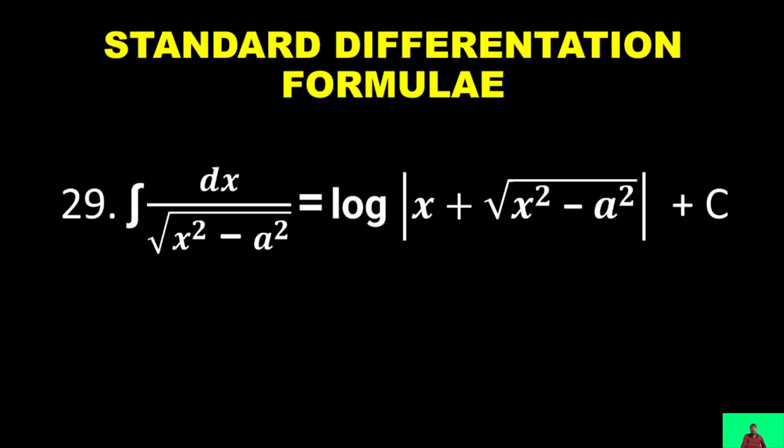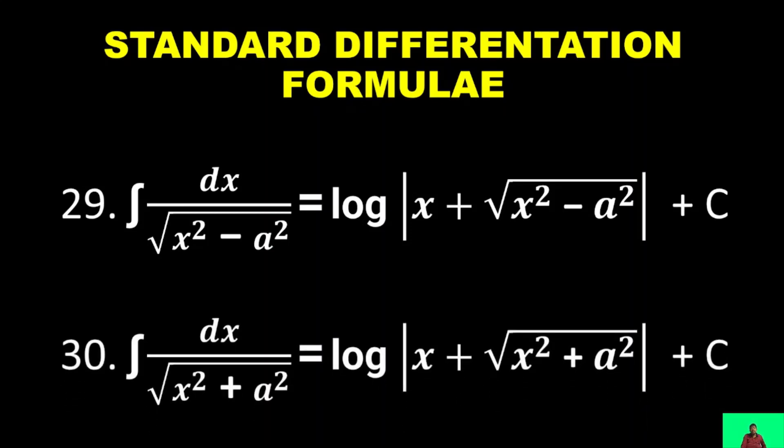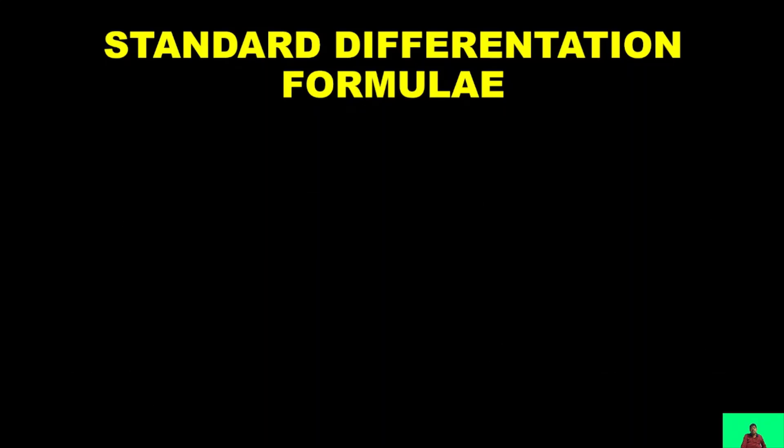∫dx/√(x² − a²) = log|x + √(x² − a²)| + C. Similarly, ∫dx/√(x² + a²) = log|x + √(x² + a²)| + C.